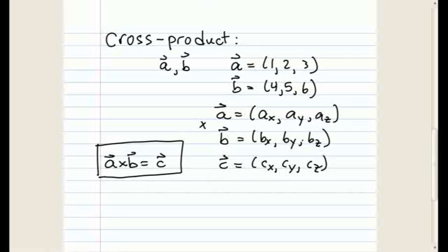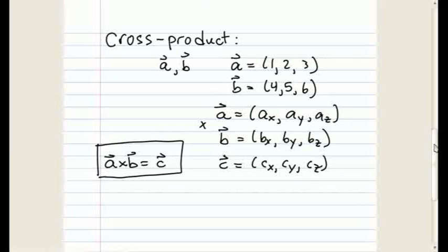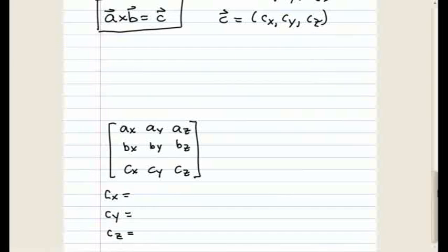Okay, well we're given A and we're given B and we need to find C. How do we do that with a cross product? Here's the trick.